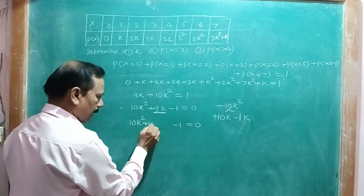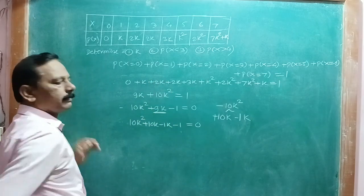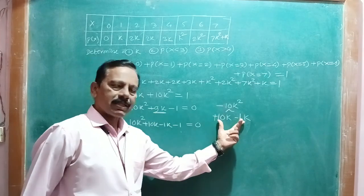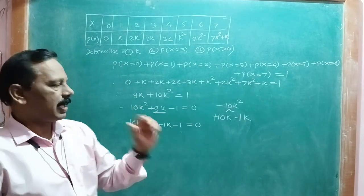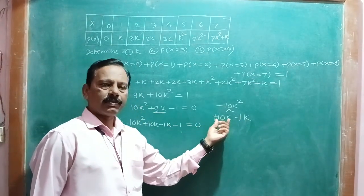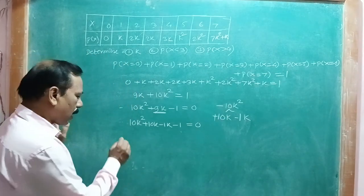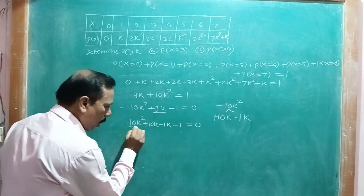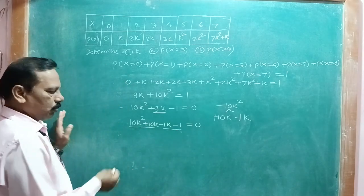We split 9k as +10k - 1k, since 10k × (-1k) = -10k². In place of 9k, we write +10k - 1k. Then we take common factors from the two groups.